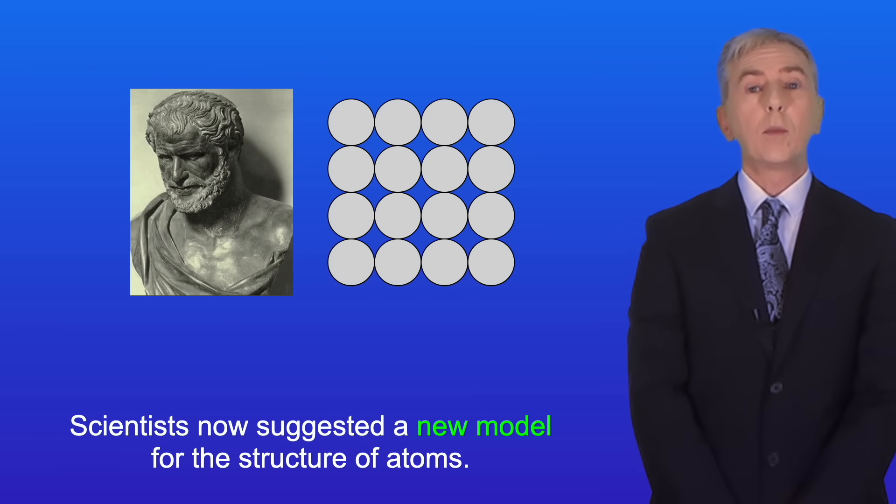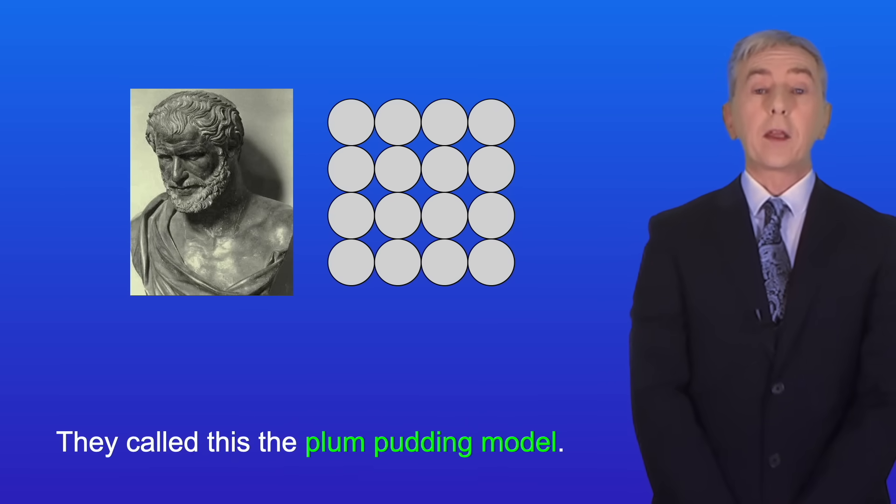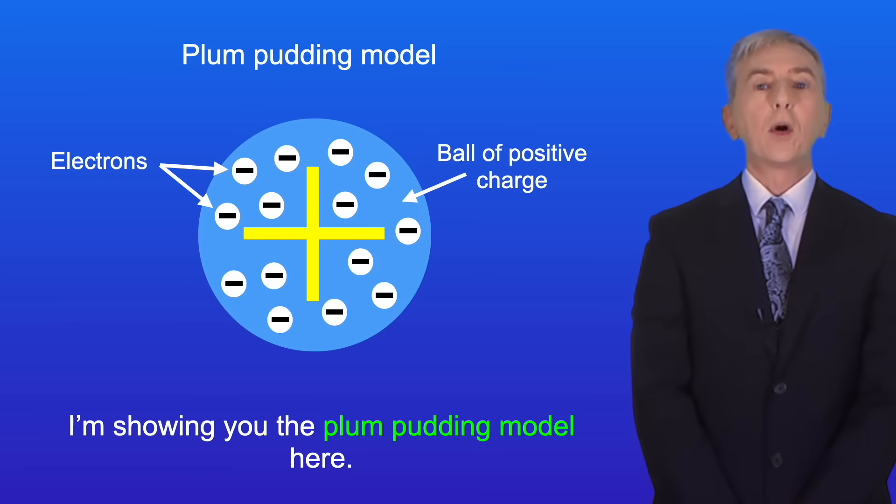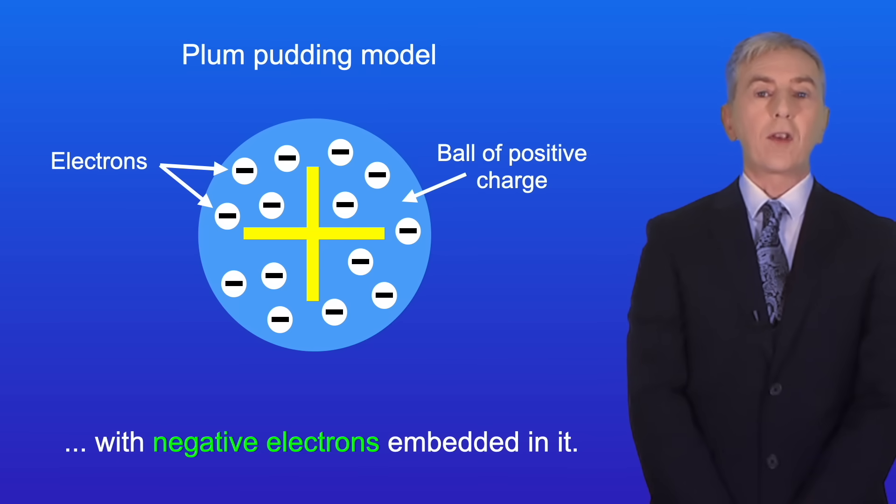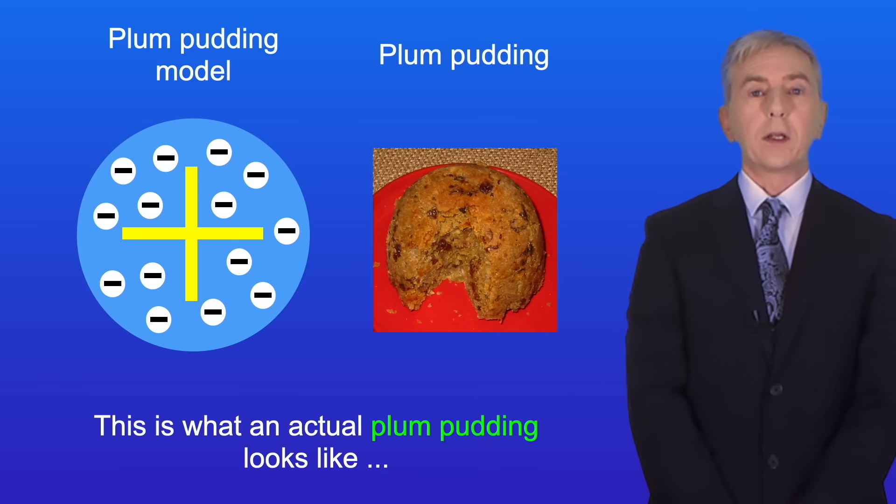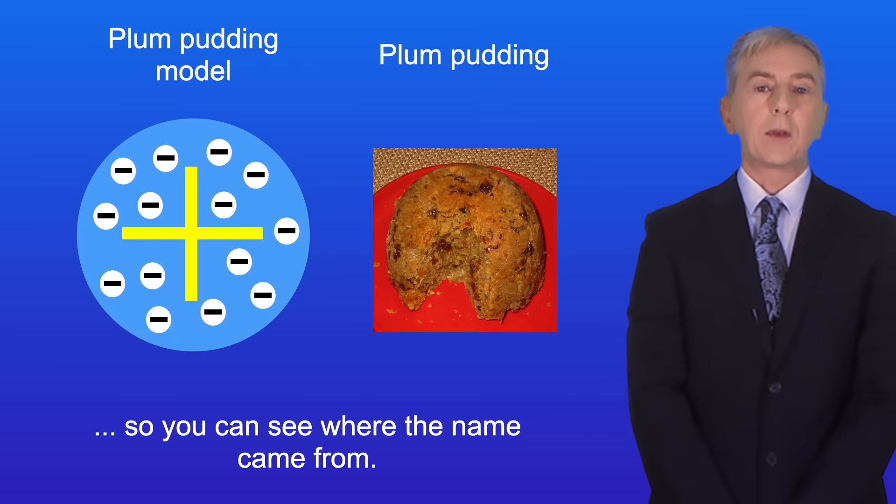Scientists now suggested a new model for the structure of atoms and they called this the plum pudding model. I'm showing you the plum pudding model here. In the plum pudding model an atom is a ball of positive charge with negative electrons embedded in it. This is what an actual plum pudding looks like so you can see where the name came from.